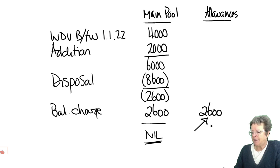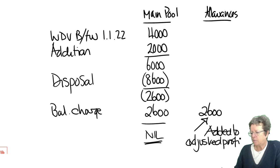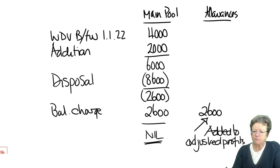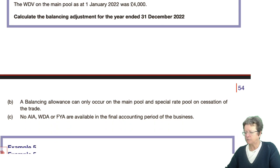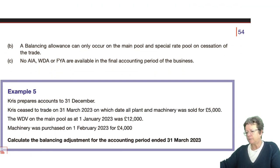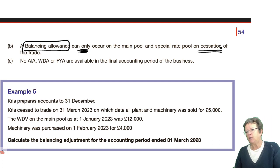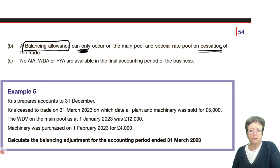That balancing charge of £2,600 would need to be added to the adjusted profits. That's a balancing charge — it can arise at any time. A balancing allowance, however, only arises when the business ceases to trade. When the business ceases to trade, there is no AIA, no written down allowance, no first year allowance. You add in the additions, take out the disposals, and everything is either a balancing allowance or a balancing charge.